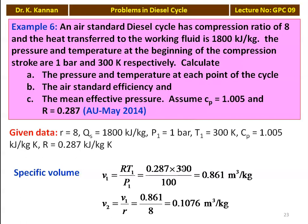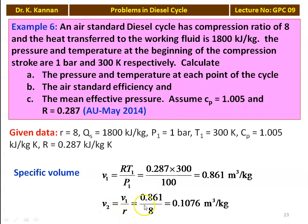We calculate the specific volume initially and after the isentropic compression. V1, the initial specific volume, equals R·T1 divided by P1: 0.287 into 300 divided by 100 kilo Pascal, which equals 0.861 meter cube per kilogram. And V2 equals V1 divided by R, where R is the compression ratio: 0.861 divided by 8 equals 0.1076 meter cube per kilogram.